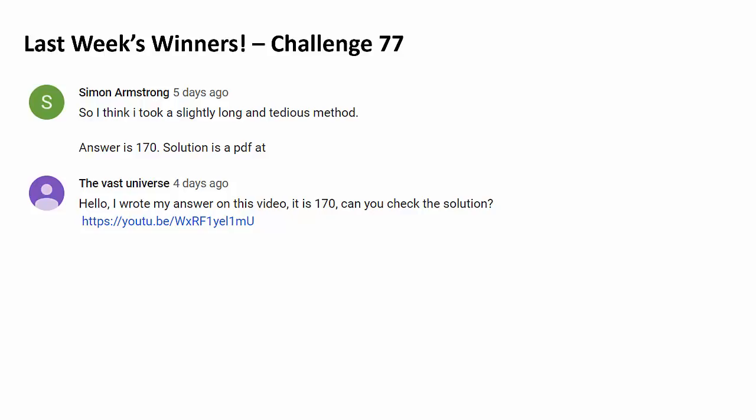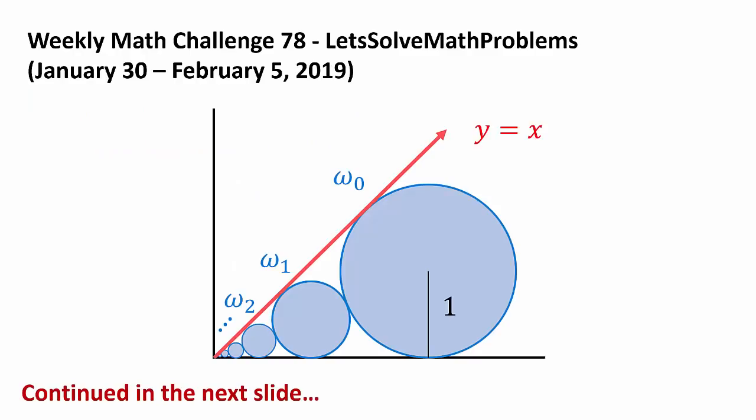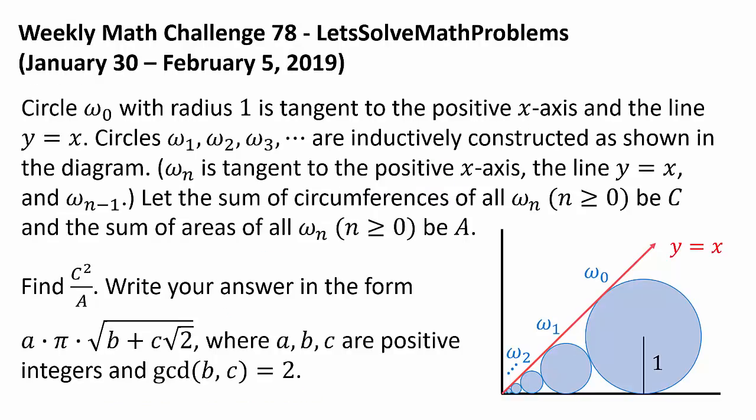Now let's get to this week's challenge. We are starting off with a diagram. So we have infinitely many circles from omega-naught, omega-1, omega-2, and so on. And here is the question.